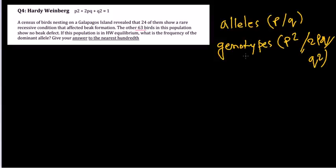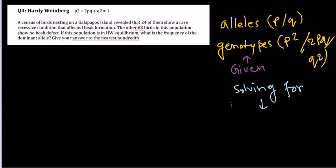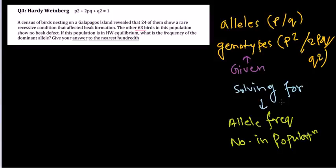Second, once you know whether you are given alleles or genotypes, you need to figure out what you are solving for — either allele frequency or number in the population. Once you identify both of these, you can manipulate the formulas to get from the given state to the solving state.